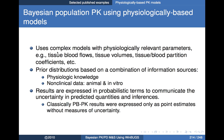For the Bayesian method, we use a complex model with physiologically relevant parameters — things like tissue blood flows, tissue volumes, tissue blood partition coefficients, and so on. Those would be typical for pharmacokinetic models; for pharmacodynamic models there might also be characterizations of receptors. Then we have prior distributions based upon a combination of information sources about those quantities, including our physiologic knowledge and non-clinical data derived from either animal or in vitro experiments.